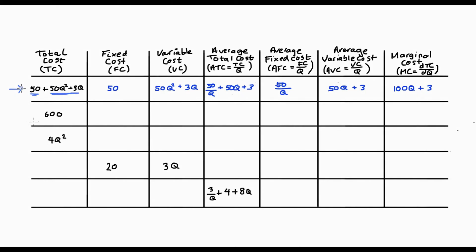In the second example, our total cost function is just a constant, so there are no variable costs here — only fixed costs, which are 600. Variable costs are 0. Using our formulas for average total cost and average fixed cost, we see that they're both equal to 600/Q. Average variable cost is just not applicable because there are no variable costs, and marginal cost is actually 0. We can tell this because the derivative of a constant is always 0, and intuitively, if there are no variable costs, then as we increase our production the costs do not change — meaning the marginal cost of an additional unit of production must be equal to 0.